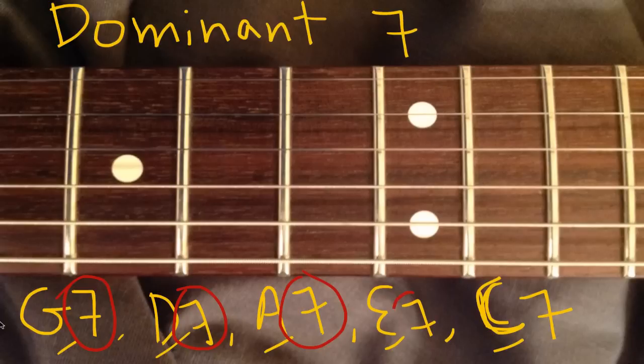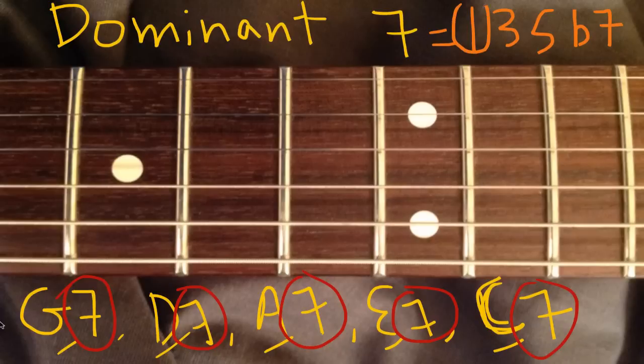So what that means, there's a single definition for what it means. It is one, three, five, flat seven. If it was a normal seven, it would be a major seven chord. It starts out like it's a major chord, because one, three, five is a major chord. But flat seven is what makes it a dominant seven chord.